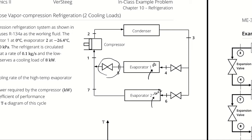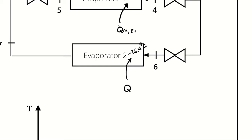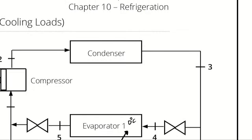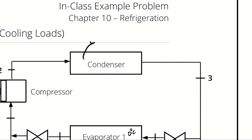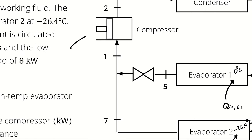We have a high pressure, true of states 1, 2, and 3; a medium pressure, true of states 4 and 5; and a low pressure, true of states 6, 7, and 1. I have two different sources of q_in: the rate of heat absorbed by evaporator 1 (q_in_e1) and by evaporator 2 (q_in_e2). The heat rejected by the condenser is q_out, and there is only a single source of work input — our compressor.